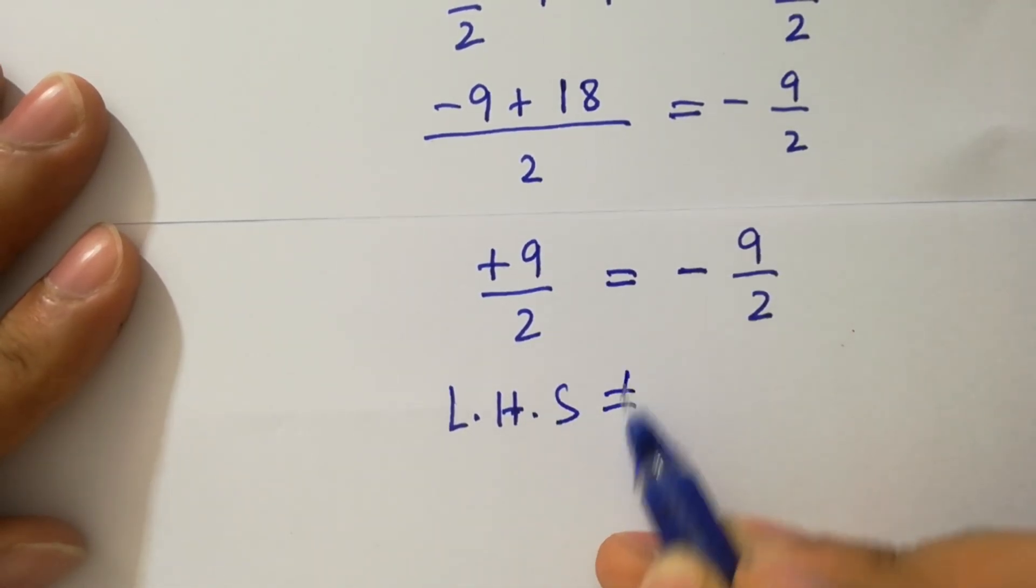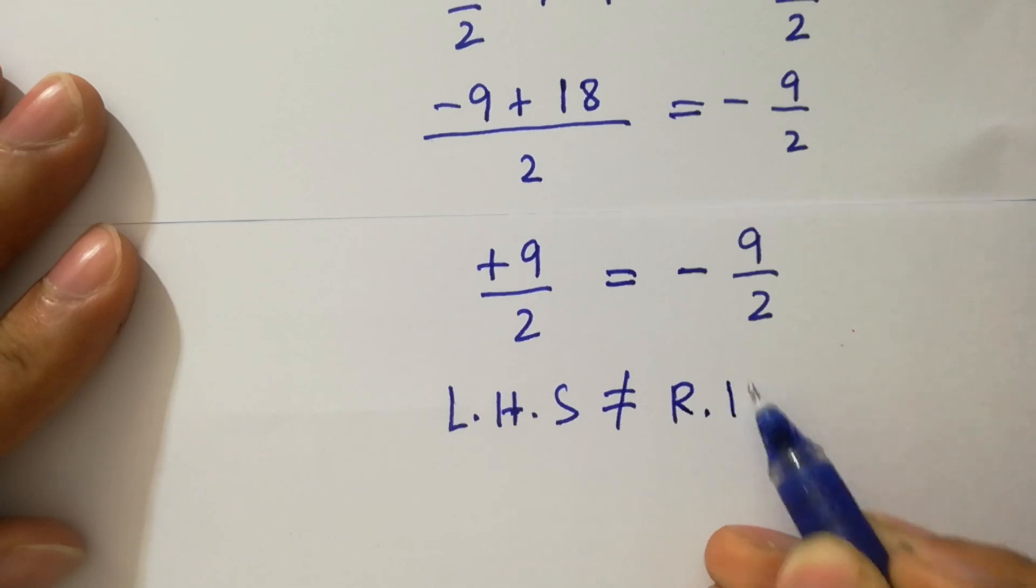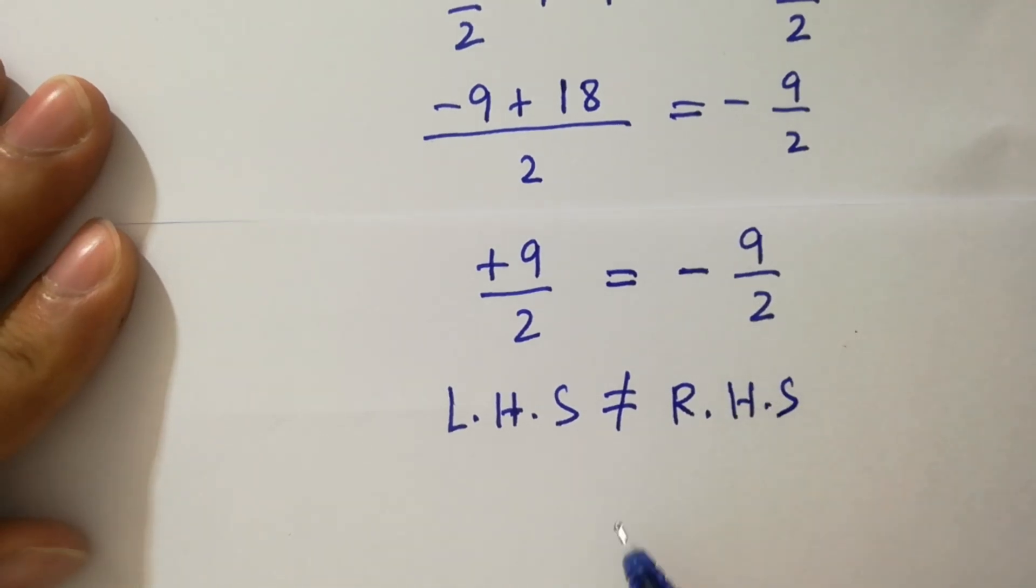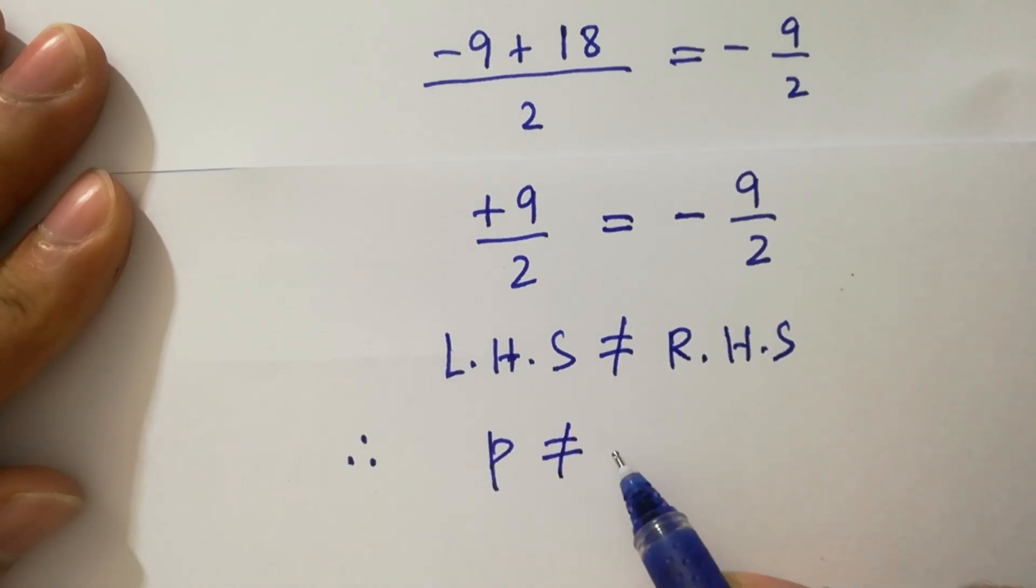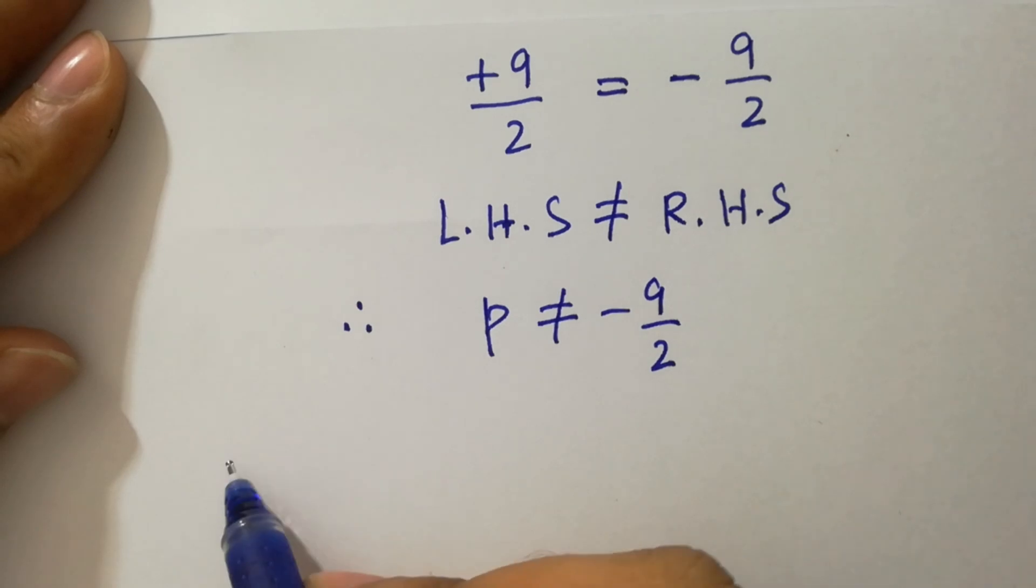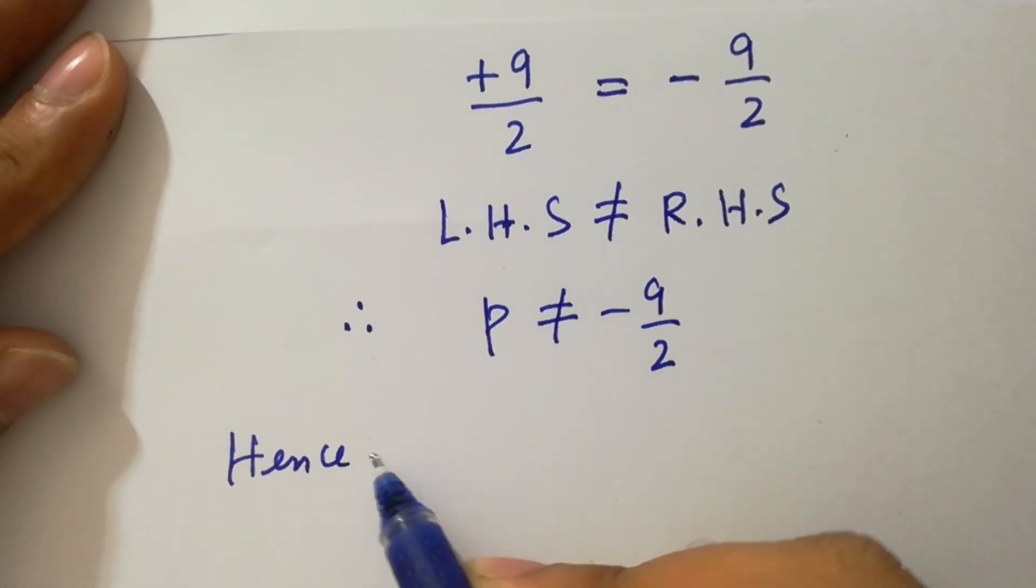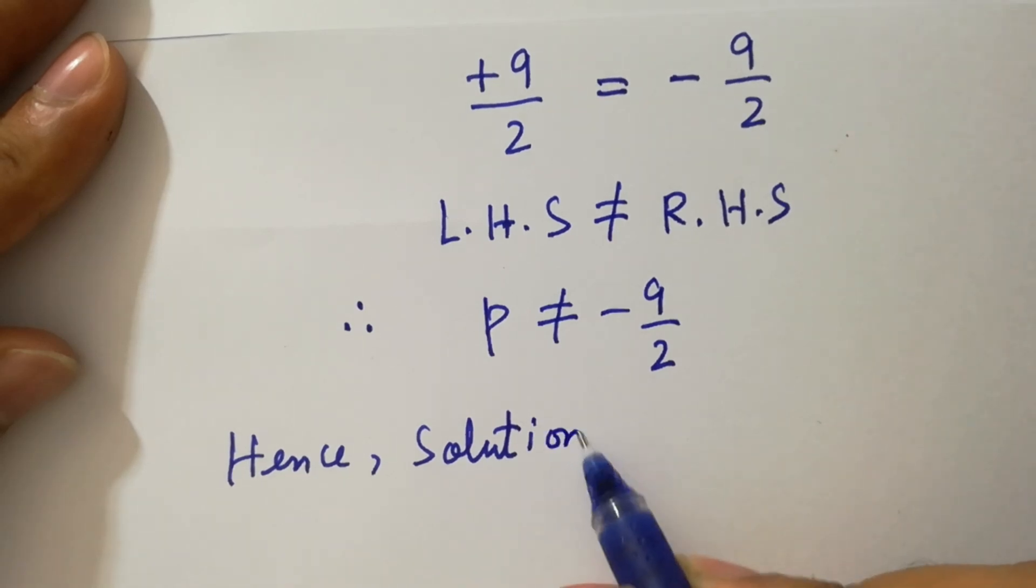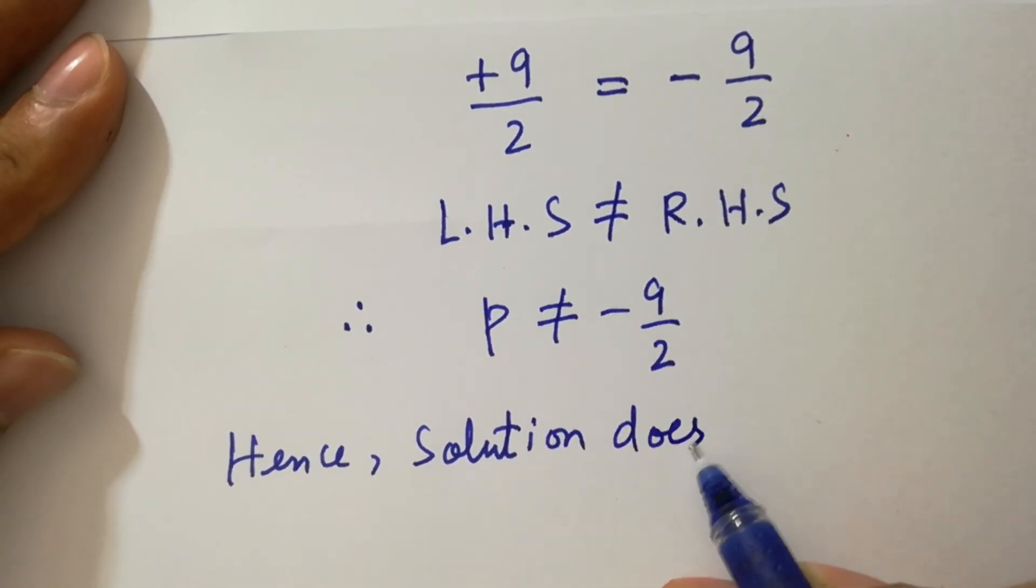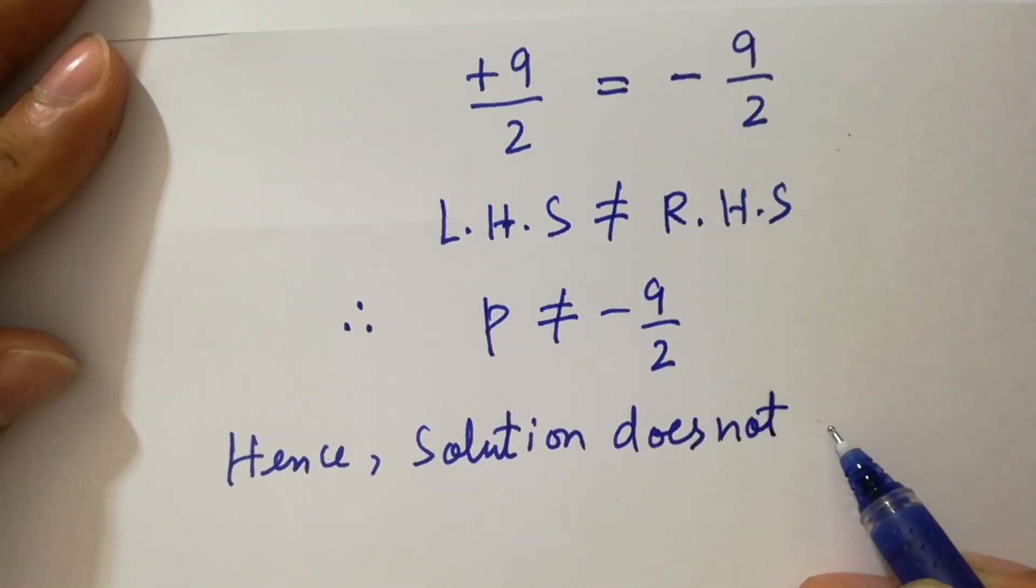...does not equal to minus 9 over 2. Hence, the solution does not exist.